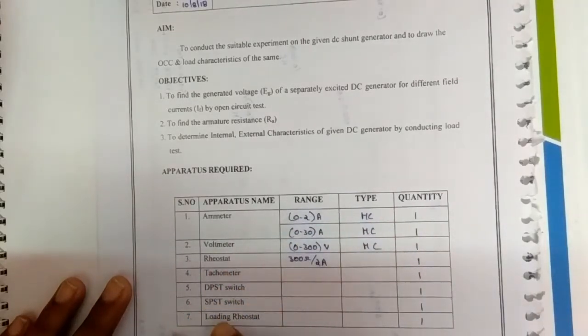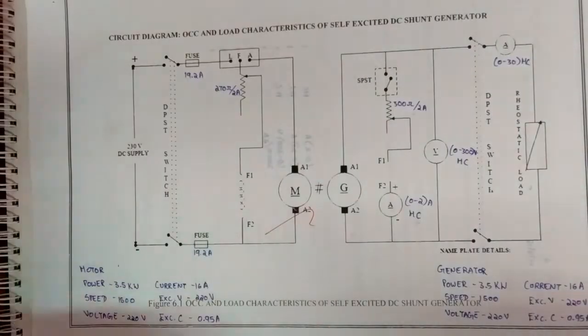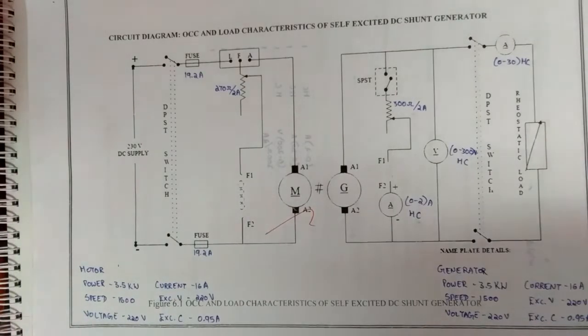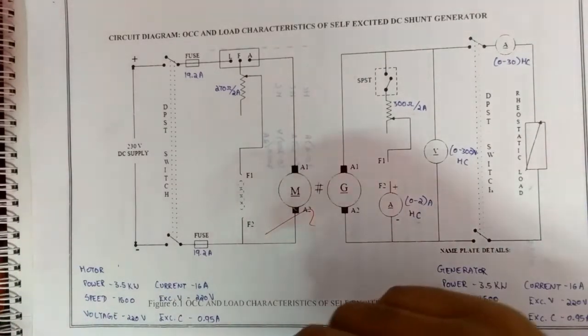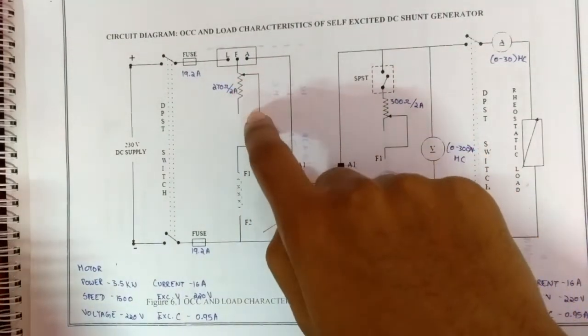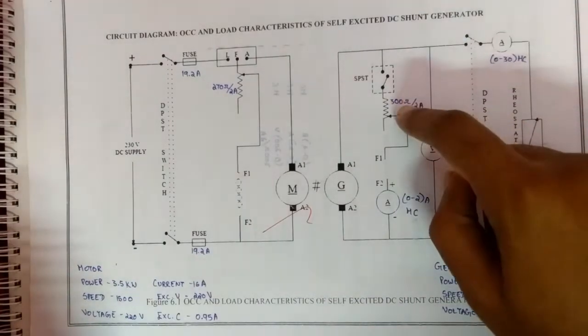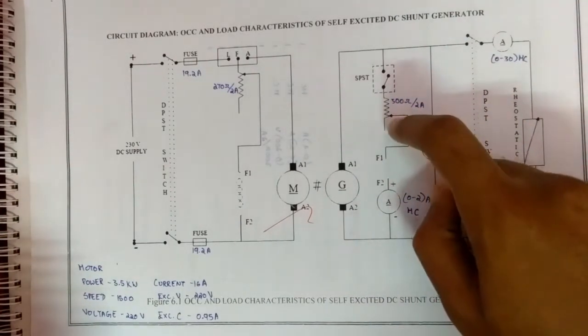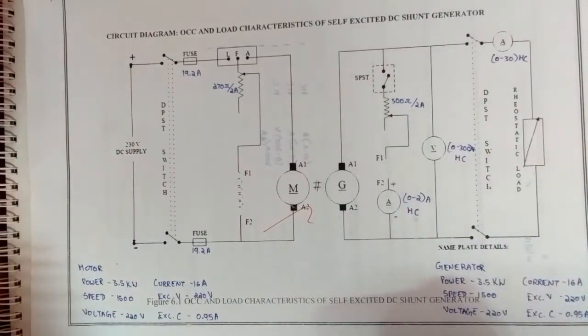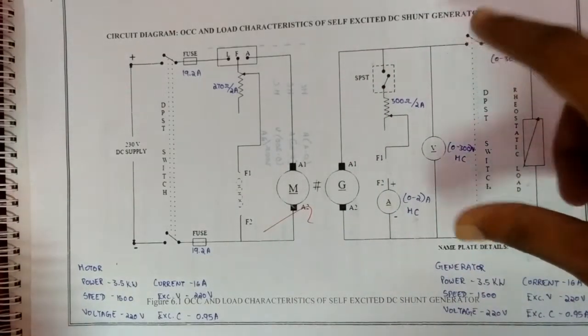Before moving to the procedure, first we should take care of the precautions. The motor field rheostat should be kept at minimum position at the time of starting. The generator field rheostat should be kept at maximum point at the time of starting. The DPSC switch 2 is open during the open circuit test.